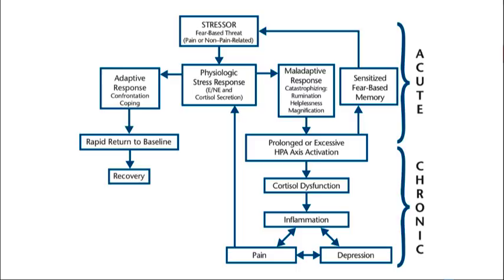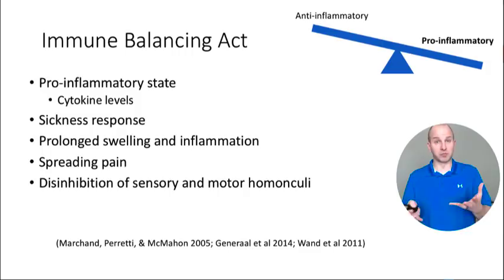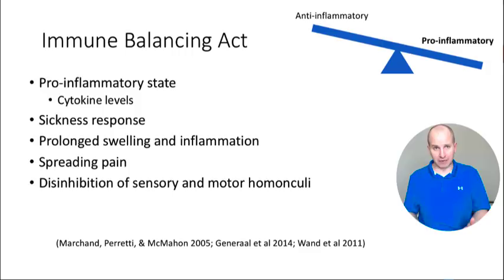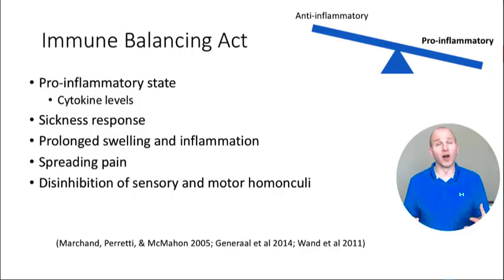The immune system has a constant balancing act going on — how active or inactive it needs to be. In fibromyalgia patients, we see studies showing the immune system staying in a hyperactive, pro-inflammatory state with high cytokine levels in blood measures. You'll also see these patients who are chronically feeling like they had the flu. When we have an active immune system and get this sickness response — feeling like crap, not wanting to get out of bed — that's a pretty helpful response in the acute stages. It helps our body rest and prioritize fighting bacteria, virus, or tissue injury.